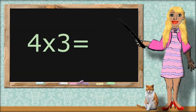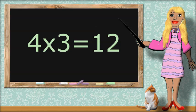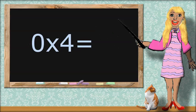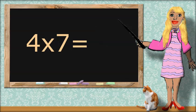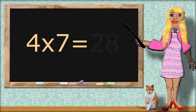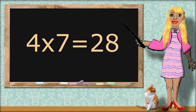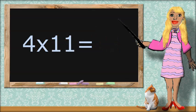4 times 3 equals... 12. 0 times 4 equals... 0. 4 times 7 equals... 28. 4 times 11 equals... 44.